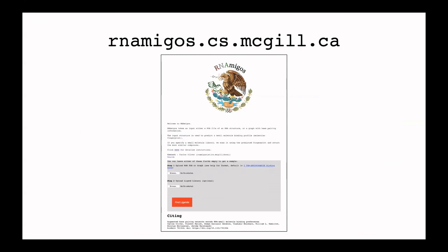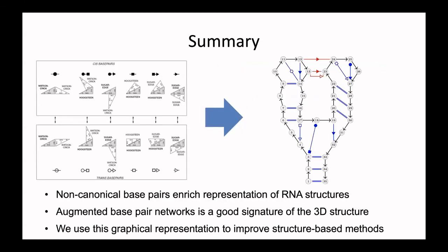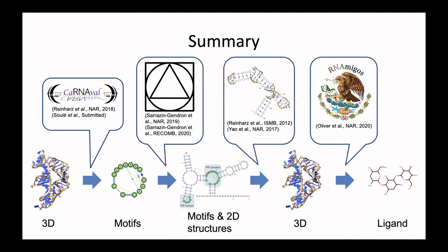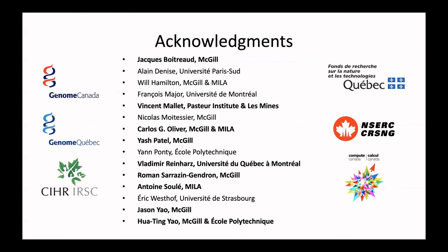RNAMIGOS is now available as a website. To summarize: we have this non-canonical base pair interaction catalog that enables us to better annotate structure, and a suite of tools that help us go from 3D structures to extract motifs, from motifs to predict motifs in sequences, from motifs to predict 3D structures, and from 3D structures to predict ligands. Thanks to all the students and collaborators — Vladimir, Romain, Jason, Carlos, Vincent, Jacques — who did amazing work here. I'm happy to take questions, or you can reach me by email.